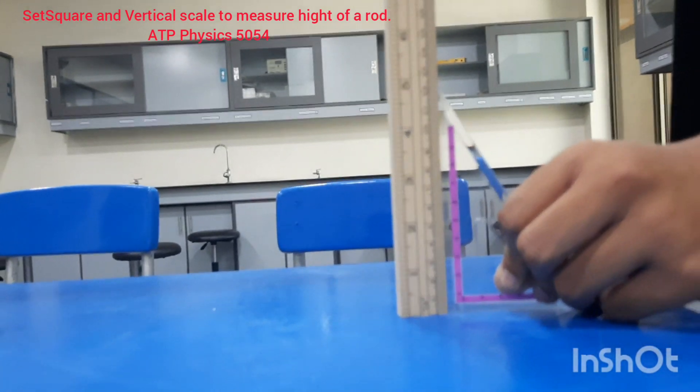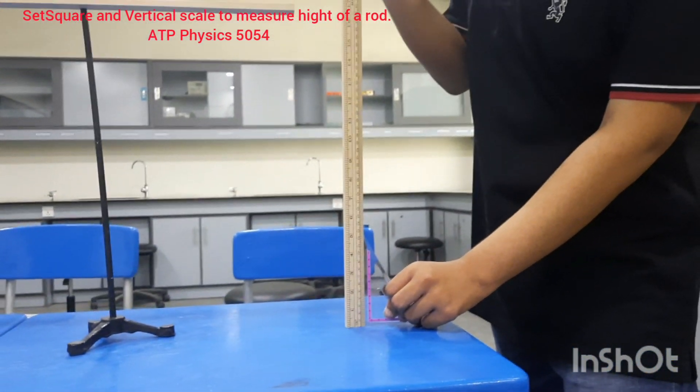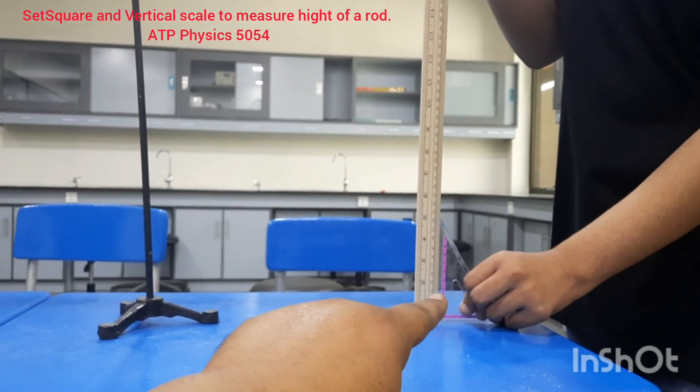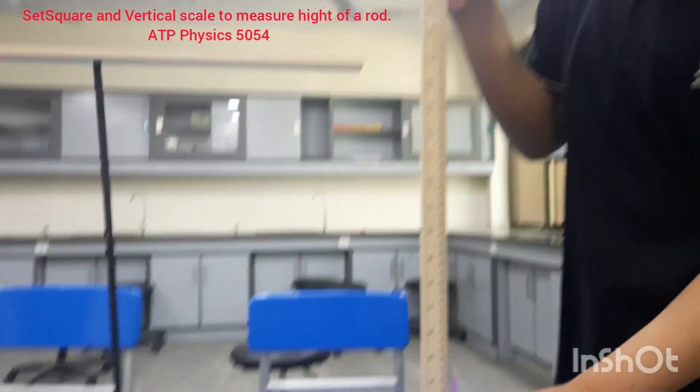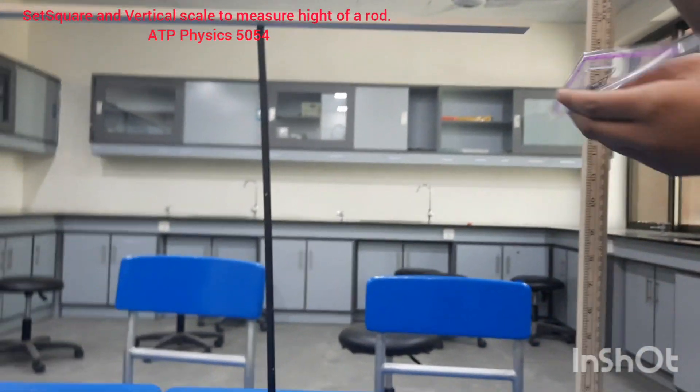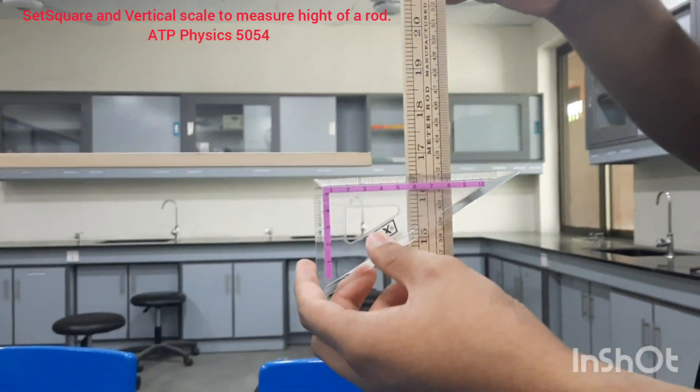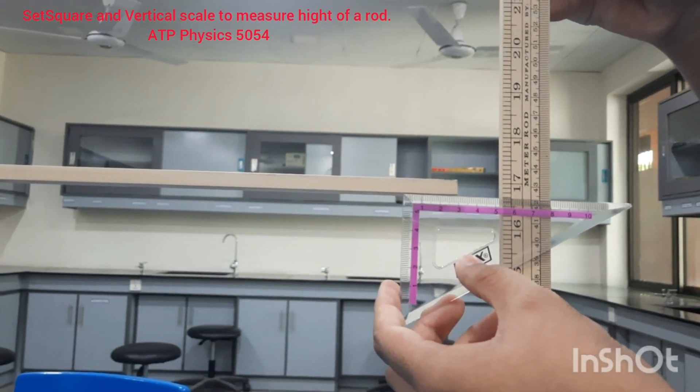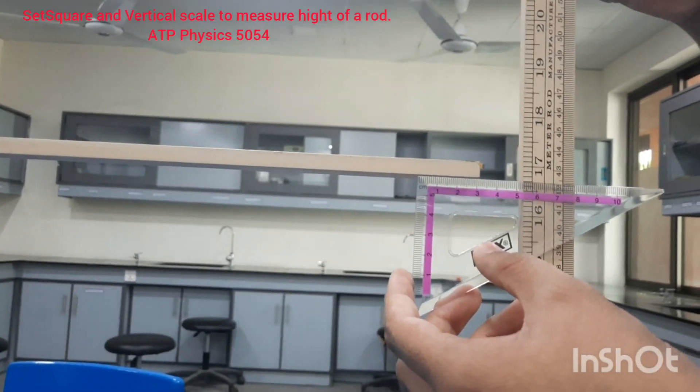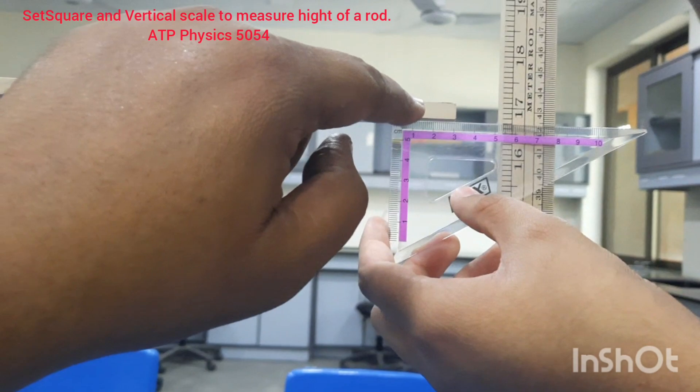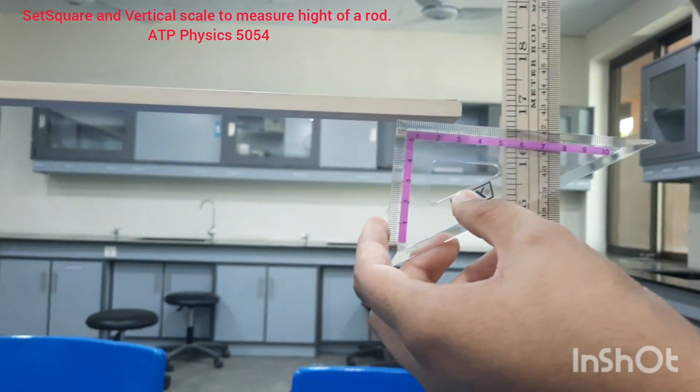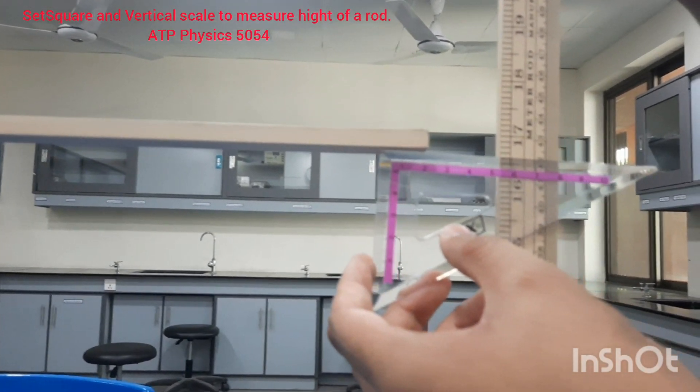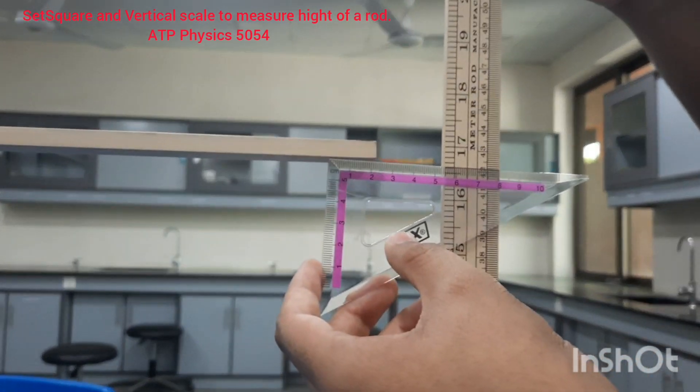Once you have made sure that this is vertical to the bench, then we use another set square to find the height of this rod. We use the set square like this because there is a little gap between the rod and the vertical rod. We use the set square like this to know what is the level of the bottom on this scale. This is how you use the set square to read the height of this rod from the bench, and this will avoid the parallax error as well.